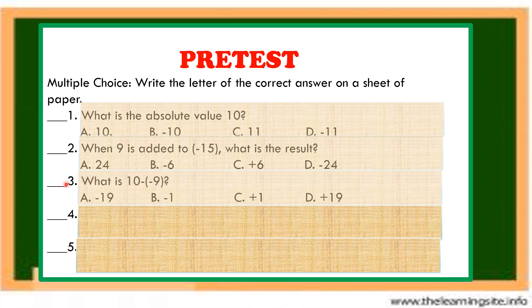Number 3. What is 10 minus negative 9? Letter A, negative 19. Letter B, negative 1. Letter C, 1. Letter D, positive 19.